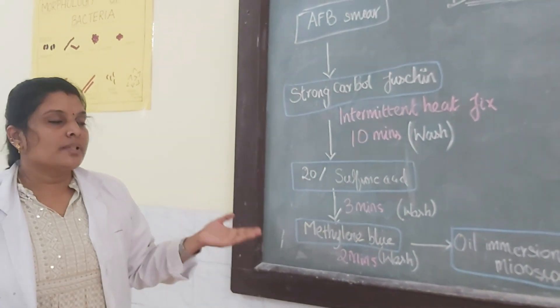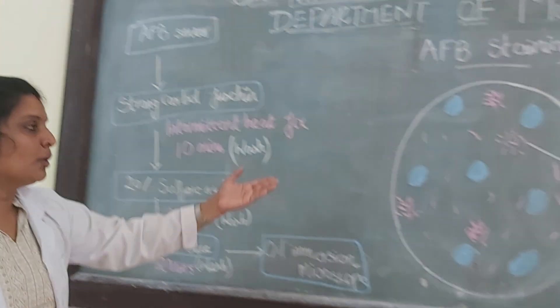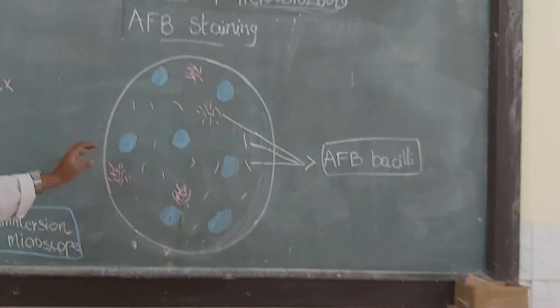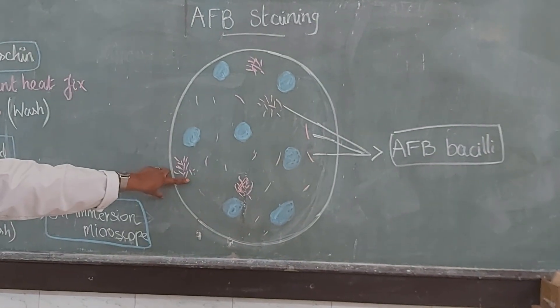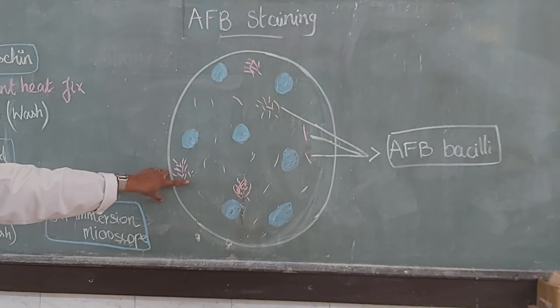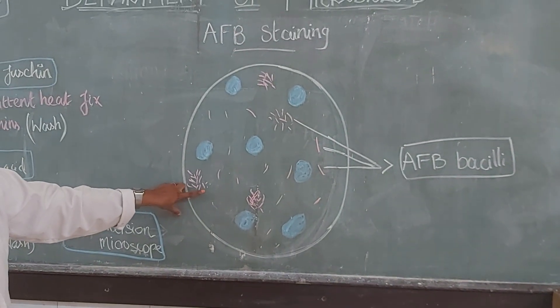Keep it under an oil immersion microscope using oil. Now you can visibly see Mycobacterium tuberculosis in the slide. This is Mycobacterium tuberculosis present in the slide.